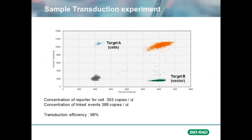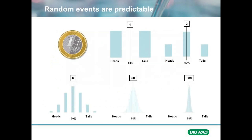From our previous session on linkage, we were able to quantify how many linked events we had in the sample. You are probably wondering how we determine these levels. For those of you who remember some of their statistics classes, random distributions are very predictable if we have sufficient events or data points being analyzed. The classic example is flipping a coin to see if it lands heads or tails.